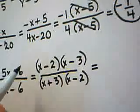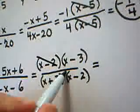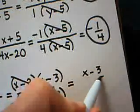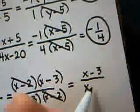And at this point, we see that the x minus 2's cancel. My final answer would be x minus 3 on the top and x plus 3 on the bottom.